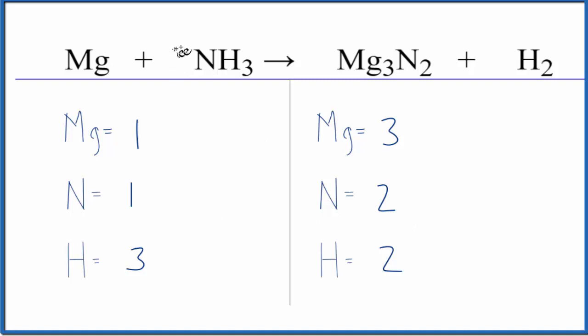So I could put a two in front of the ammonia. One times two, that'll give me two nitrogen atoms. Those are balanced.